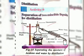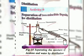Miscible liquids are those where one liquid dissolves completely in another. By the distillation process we can separate miscible liquids. For example, acetone and water — we take the mixture in a flask, fit a thermometer, clamp it to a stand, and attach the condenser.